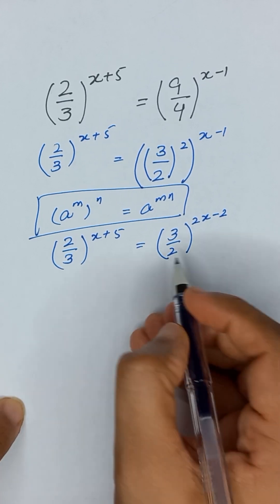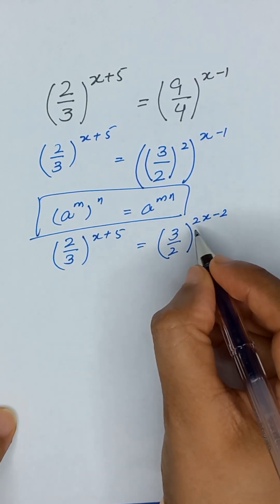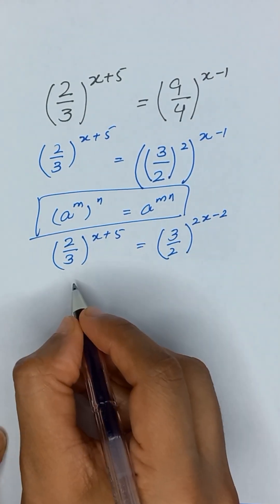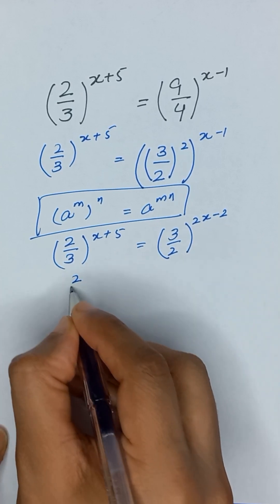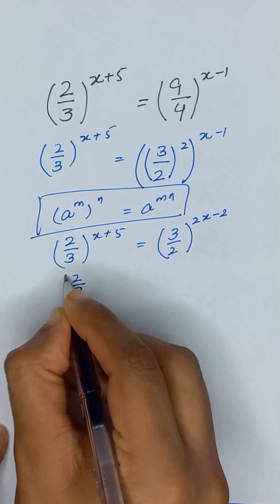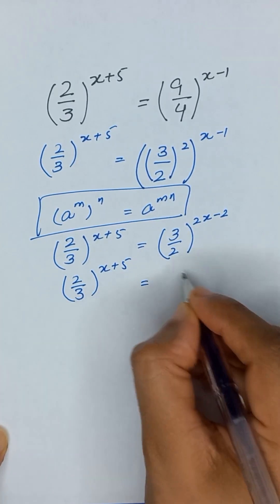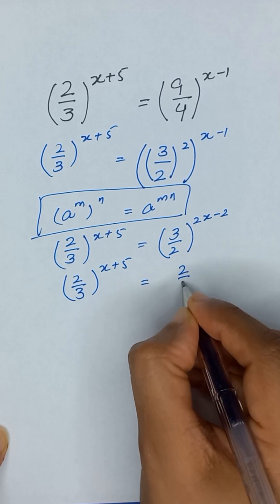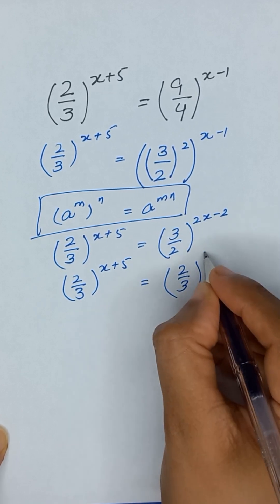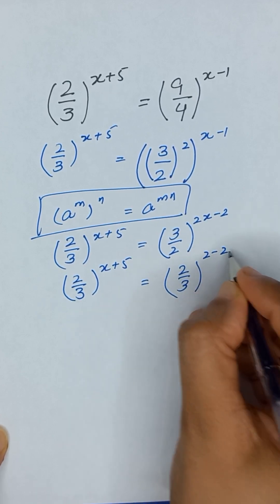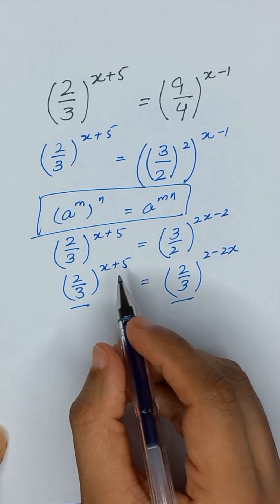Here we have 2 divided by 3 on the left and 3 divided by 2 on the right, so we take the reciprocal and the sign of the power will also change. It will become 2 divided by 3 to the power x plus 5 is equal to 2 divided by 3 to the power 2 minus 2x.